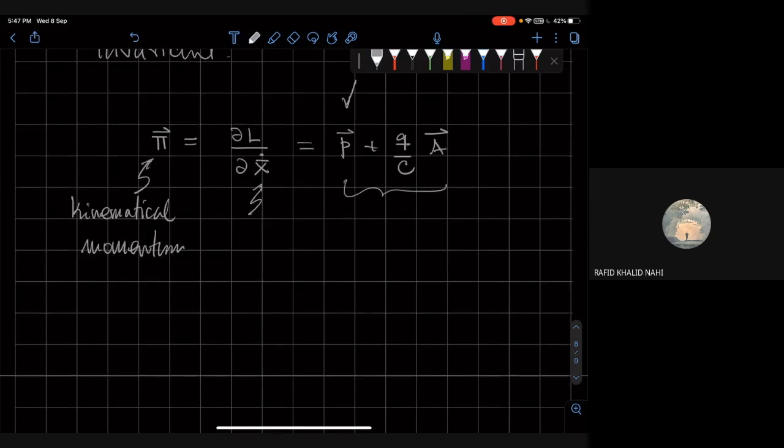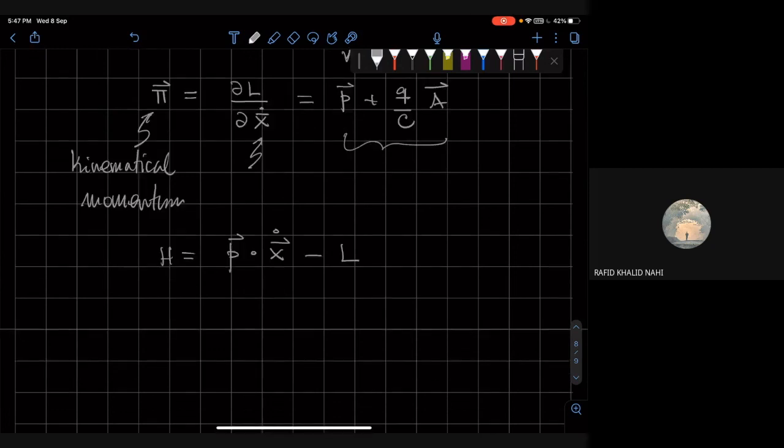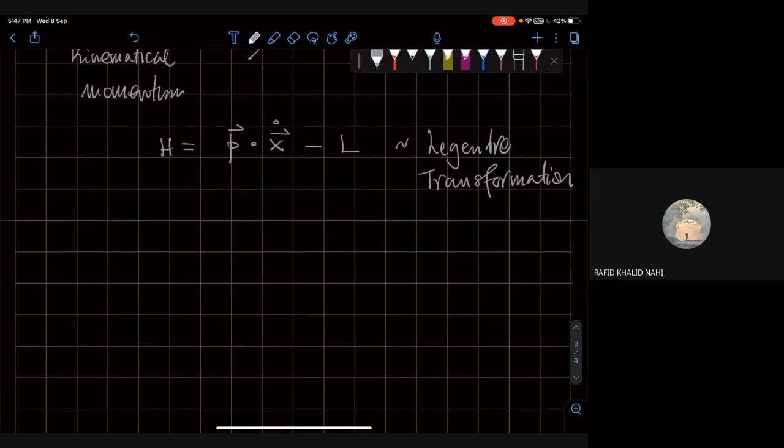is p plus q by c a. So this means that there is also momentum contained in the electromagnetic field. It's not just the momentum of the particle, the mechanical momentum. So then we can, from there, we can say what the Hamiltonian is. Well, the Hamiltonian is nothing but p dot x dot minus L. This is the famous Lagrangian transformation, which you all learned about in stat mech.